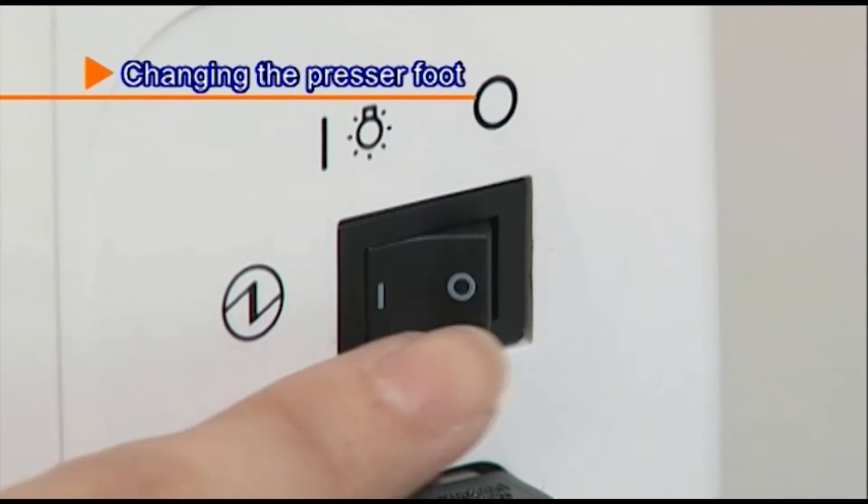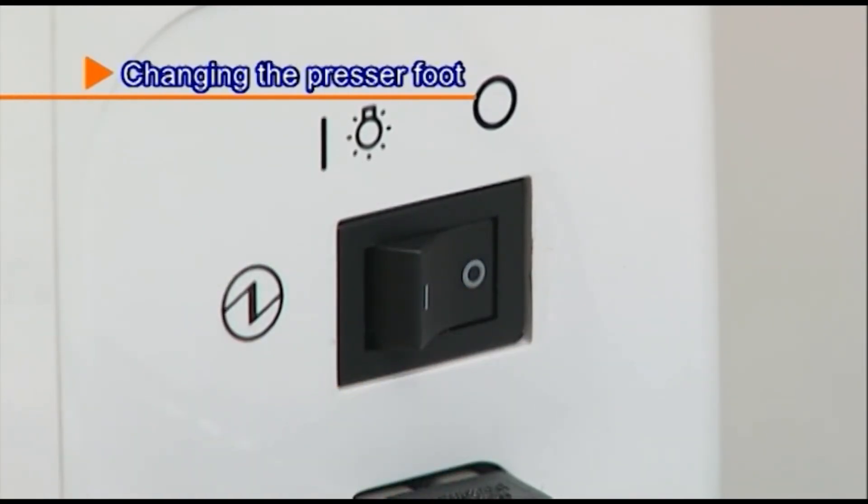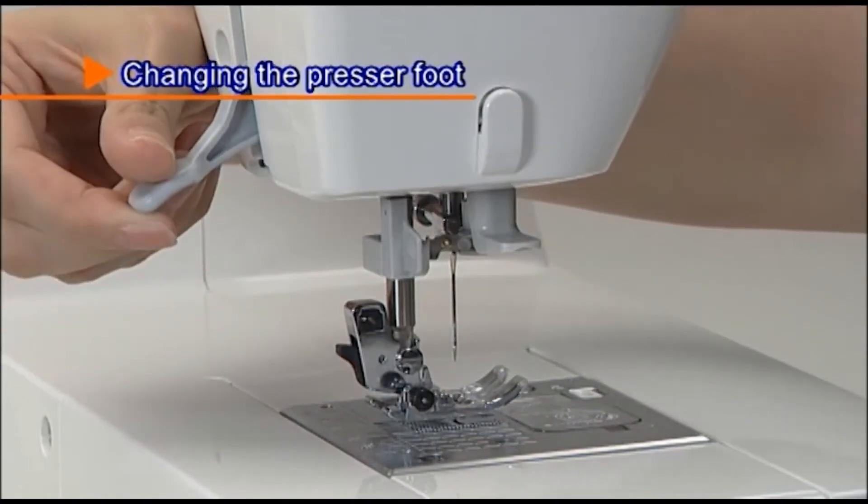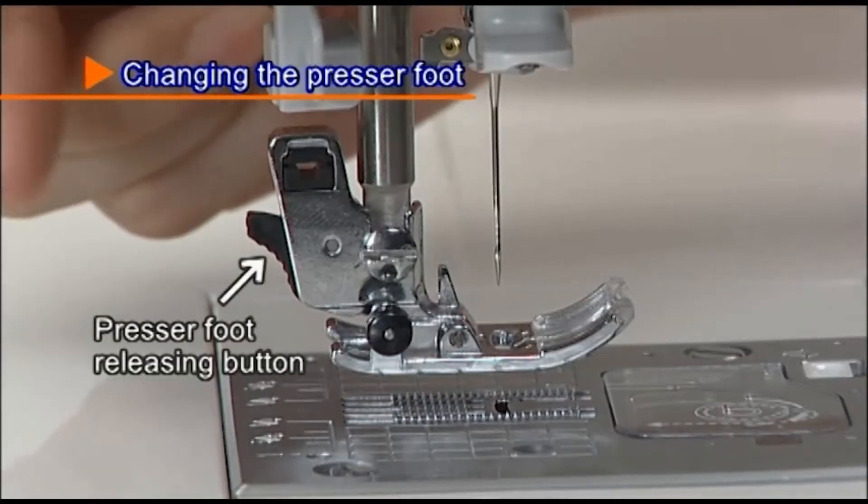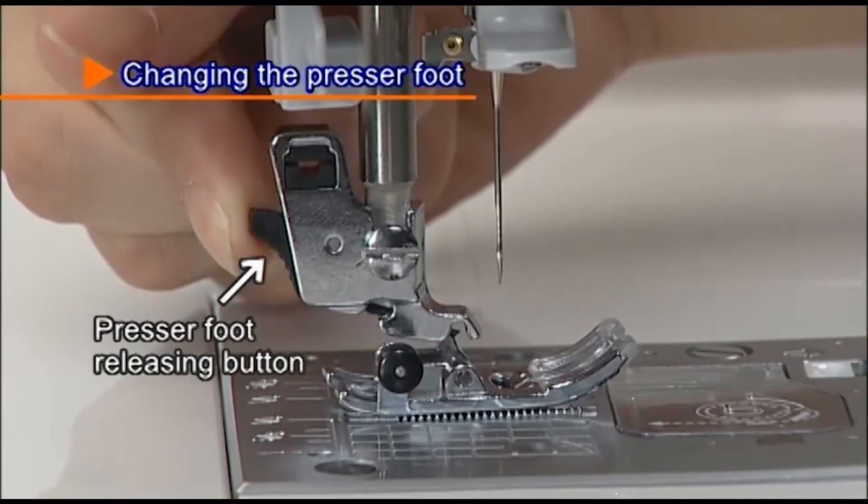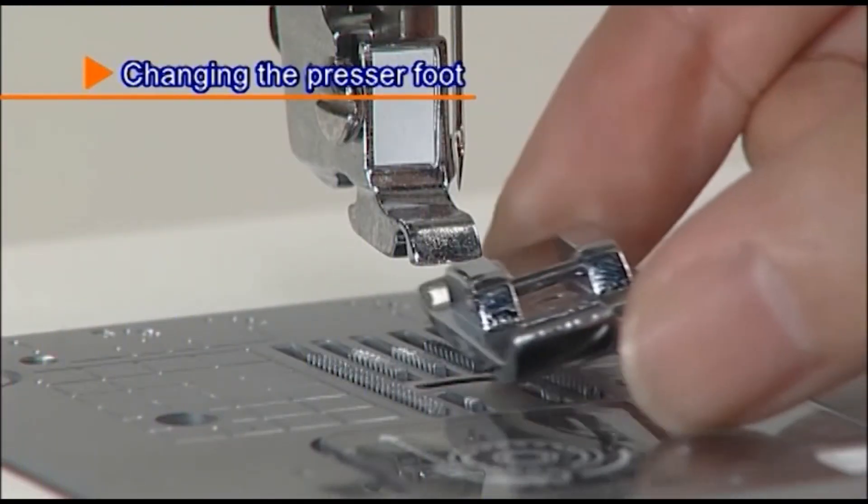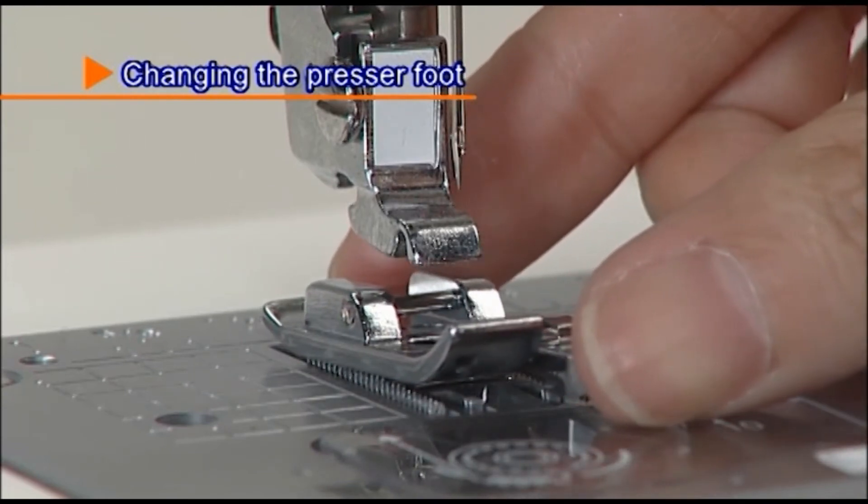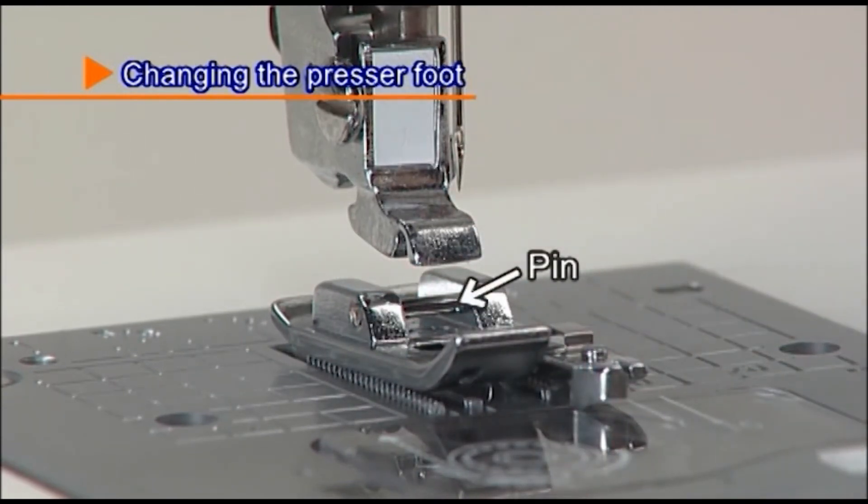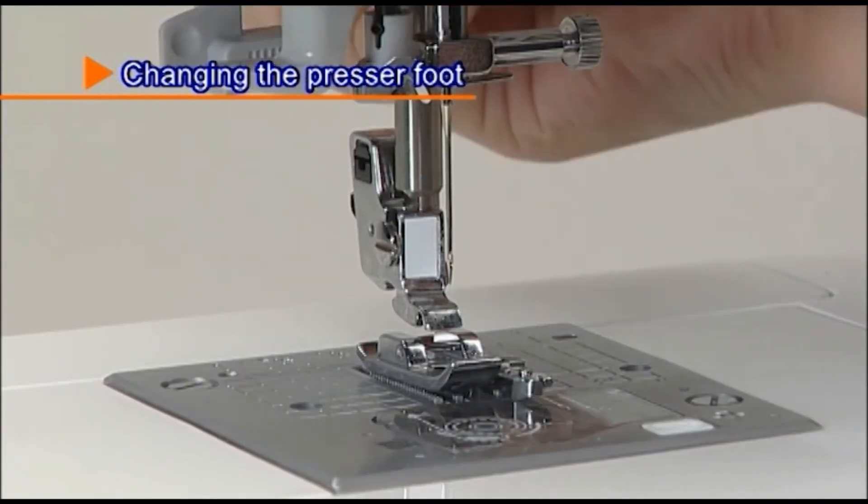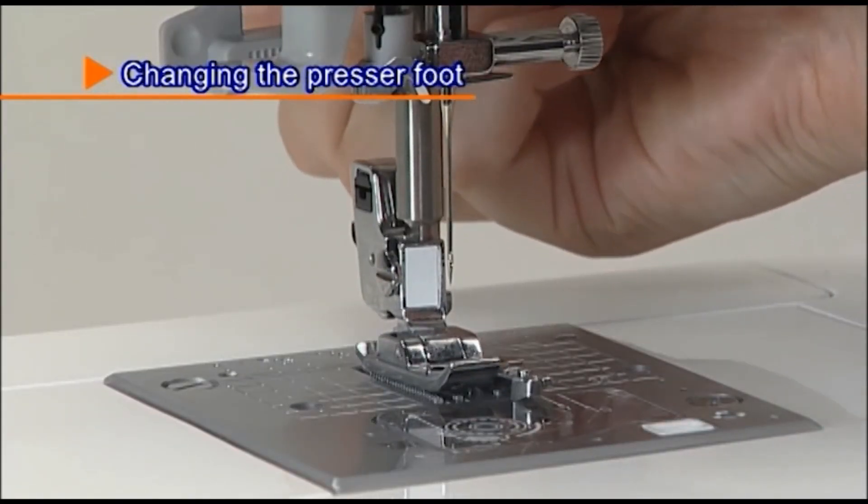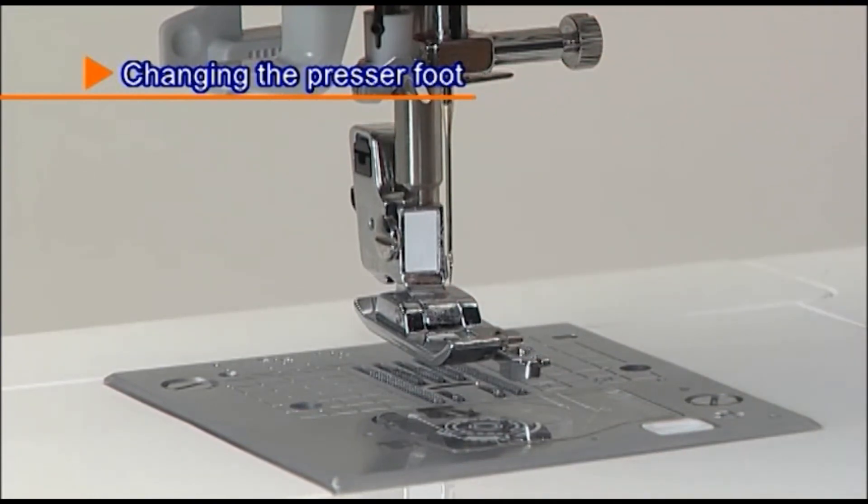Turn the power switch off before replacing the presser foot. Raise the presser foot. Press the presser foot releasing button to remove the presser foot. To attach the new presser foot, align the pin on the presser foot and the groove on the presser foot holder. Carefully lower the presser foot holder with the presser foot lever.